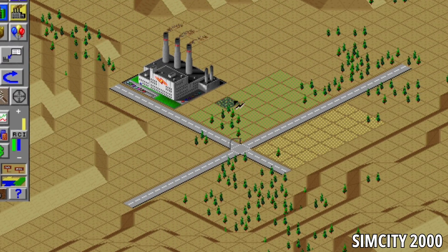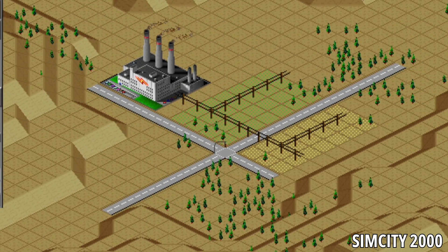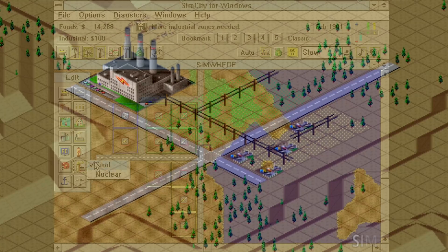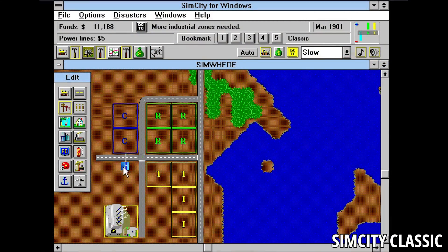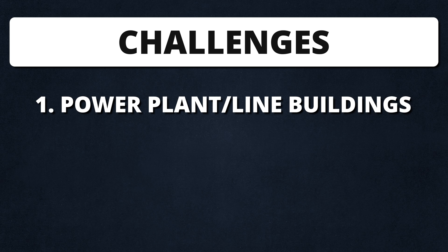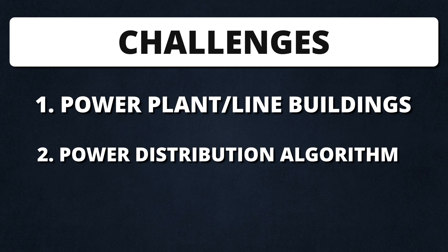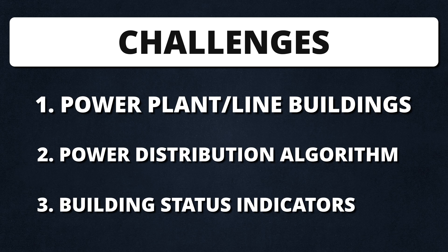Power distribution is a classic problem you find in every city builder. Buildings require power, and in order to meet these demands, you build power plants and connect them to your city with power lines. I've broken this down into three separate challenges. First, I'll need to create two new buildings — a power plant and a power line. Power plants need to get power to all of the buildings that need it, so I'll need to write some type of power distribution algorithm. I'll also need some way of alerting the player if a building has power or not, so they know if their city's power grid is working.